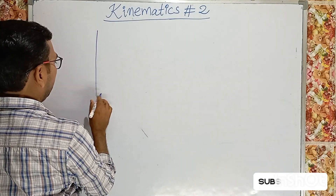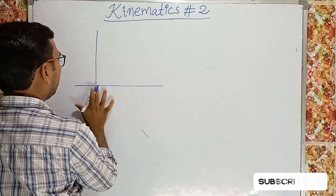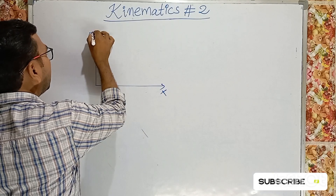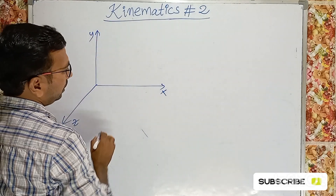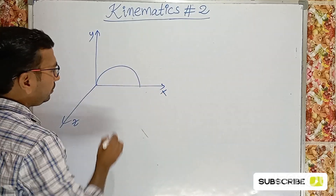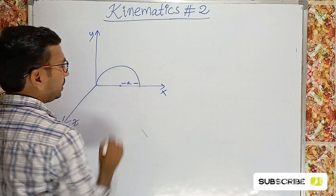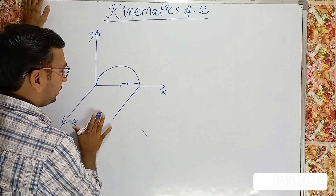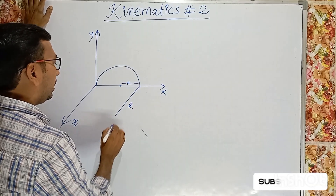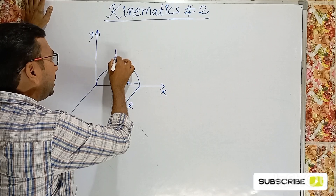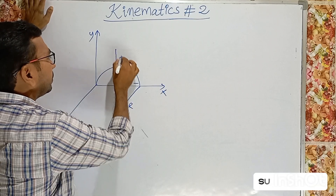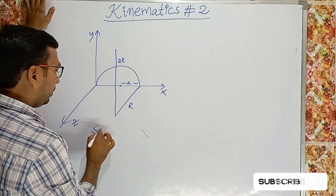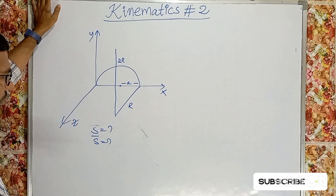Today we'll discuss a problem from lecture number one. A particle moves along the x-axis in a semicircular path with radius r, and after that it travels along the z-axis a distance r, and moves parallel to the y-axis with a distance 2r. The question asks: what is distance and what is displacement?